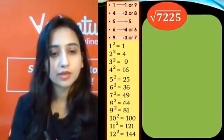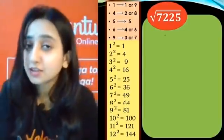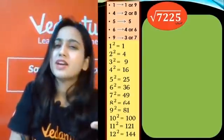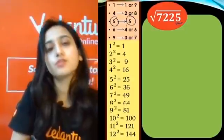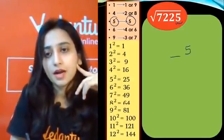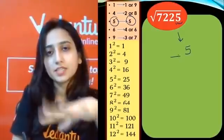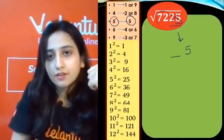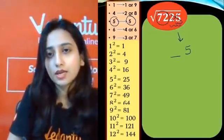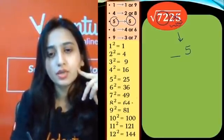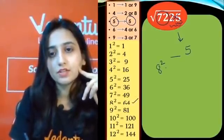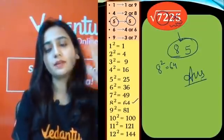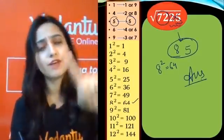Let's see one more question. Unit digit is 5 — it's simple. If unit digit is 5, then the answer unit digit will also be 5. So that's settled. Now for the tens place: the remaining number is 72. 8 squared is 64 — so 72 is between 64 and 81, meaning the tens digit is 8. The answer is 85. Since for unit digit 5 we have only one possibility, it's straightforward.